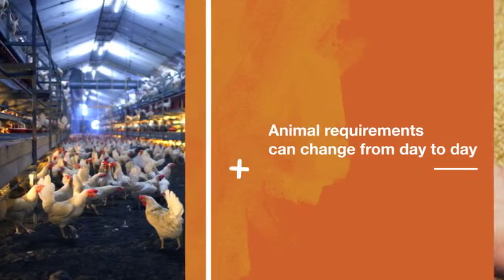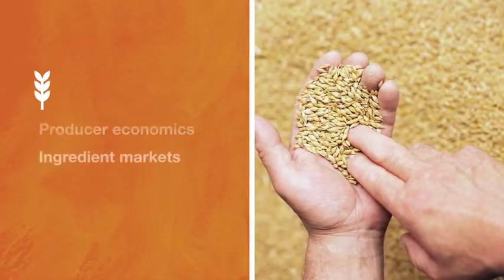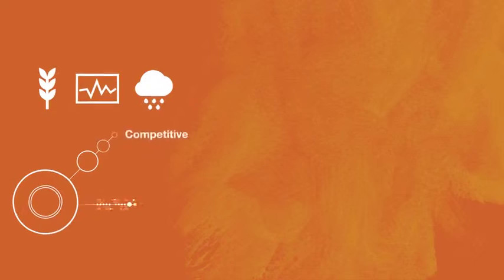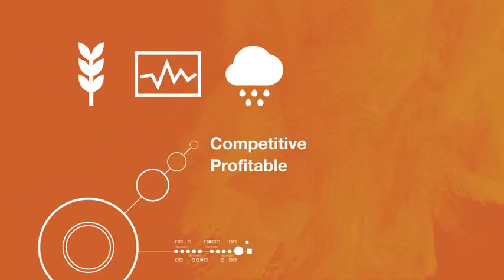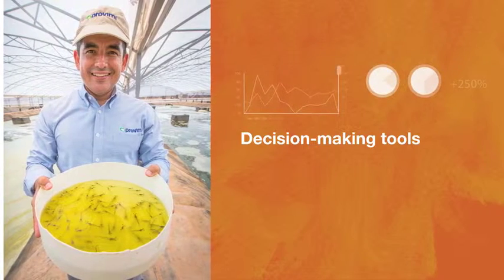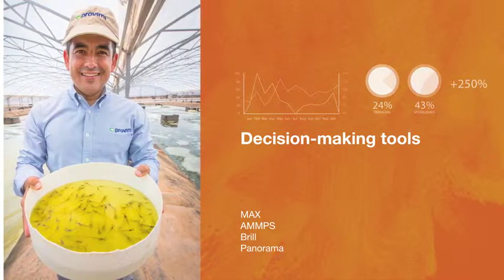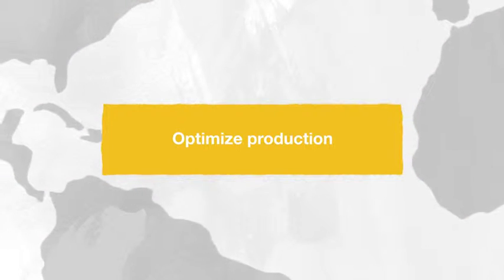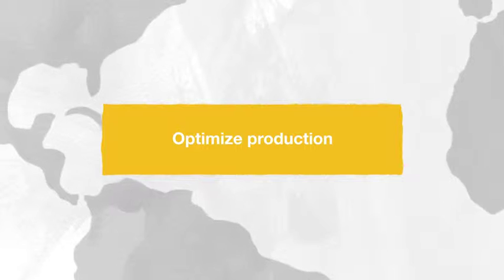Each day in the life of an animal producer holds different challenges. Animal requirements can change from day to day. So can ingredient markets, producer economics, and the weather. To stay competitive and profitable, you need to respond to these fluctuations as they occur. Our suite of dynamic decision-making tools gives guidance to customers like you around the world.